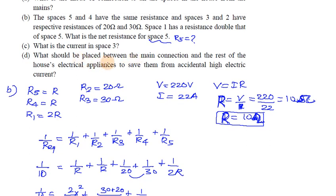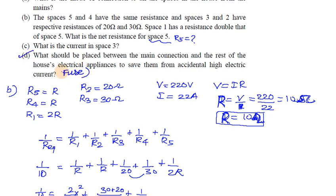Question D: What should be placed in the main connection and the rest of the house's electrical appliances to save them from accidentally high electric current? To protect from high current, a fuse should be used in the main connection.